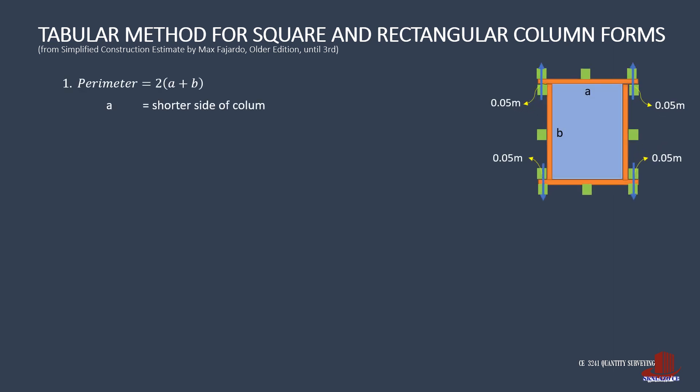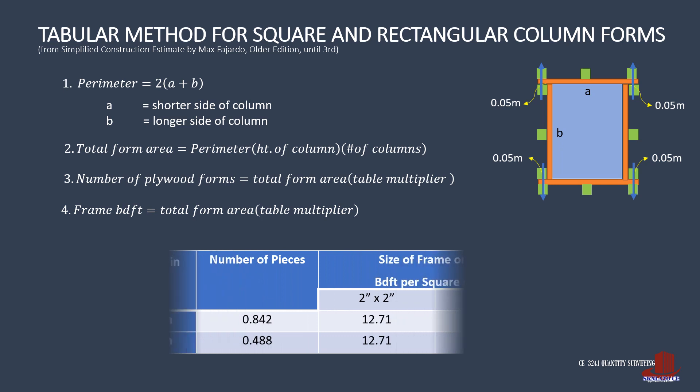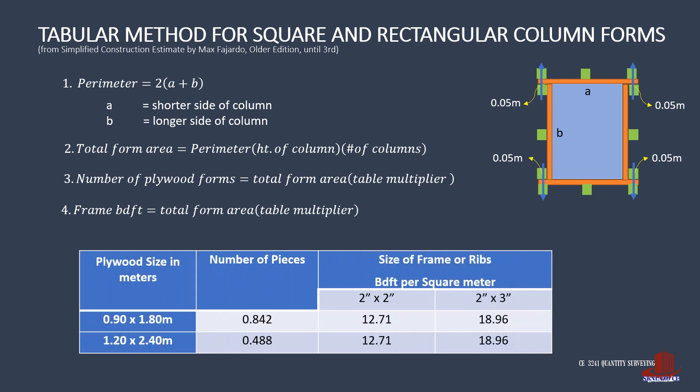Just for comparison, check out the other method using tables to determine the plywood forms. The perimeter is taken only as twice the sides and the area is solved by multiplying the perimeter by the height of the column and the number of columns. The number of plywood forms is solved by multiplying the form area with the multiplier provided in the table. The frame is also taken by multiplying the form area by the table multiplier for frames.